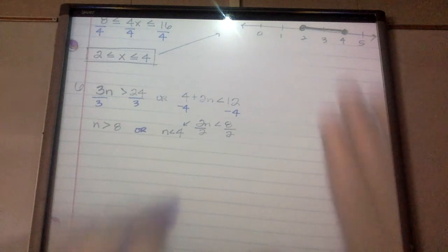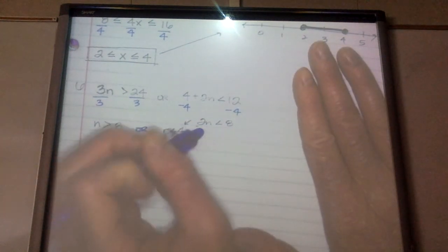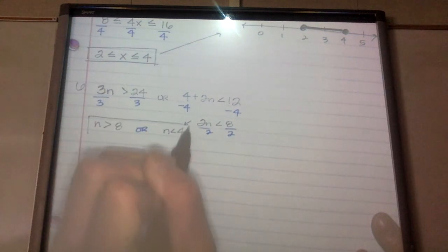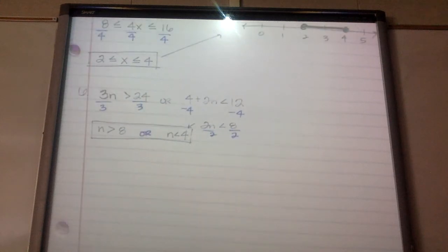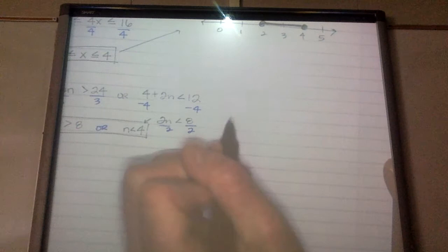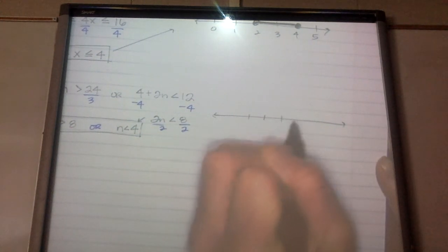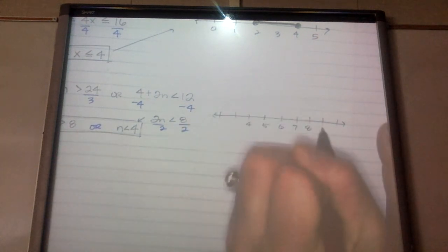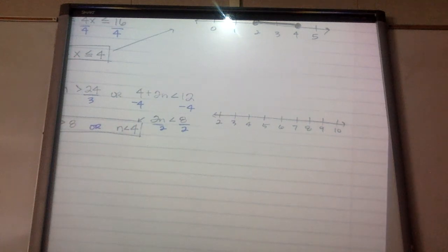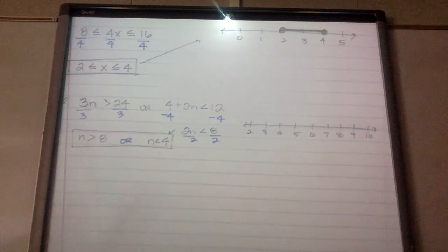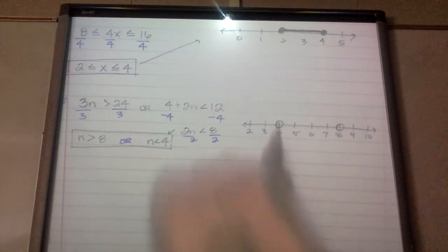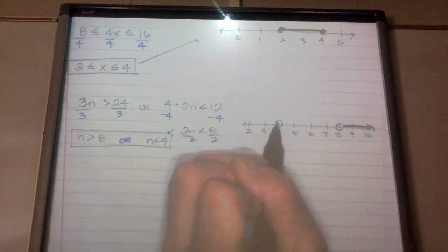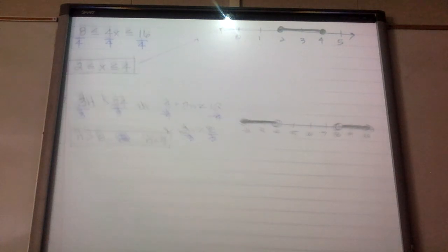My solution: n is either greater than 8, or n is less than 4. I'm going to graph that on the number line with 4, 5, 6, 7, 8, 9. Neither of these have the equal to, so I have an open circle at 8 and an open circle at 4. n is greater than 8, so numbers greater than 8 are to the right. n is less than 4, so numbers less than 4 are to the left — and that would be the answer.